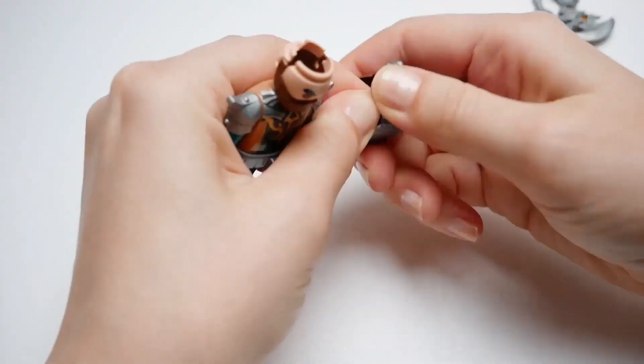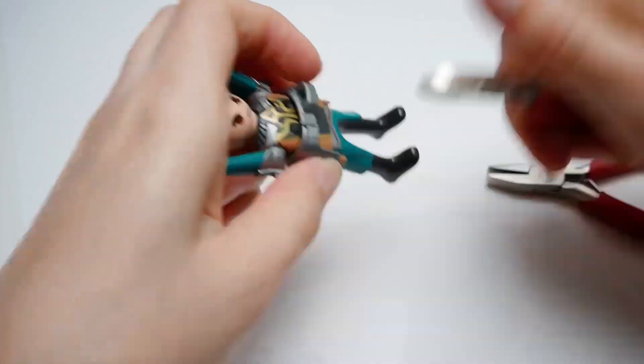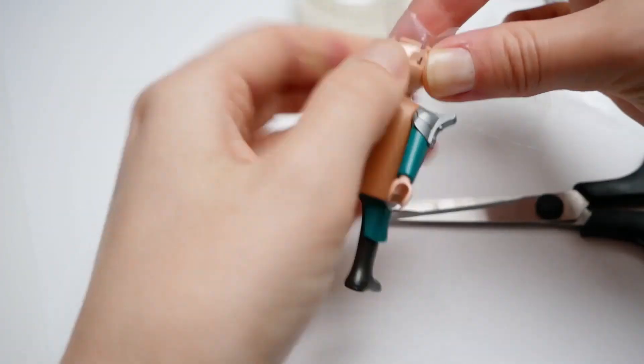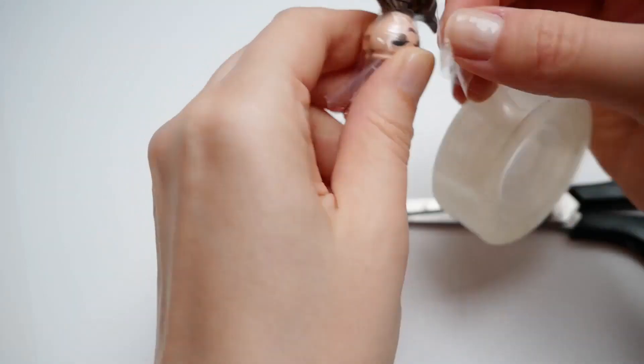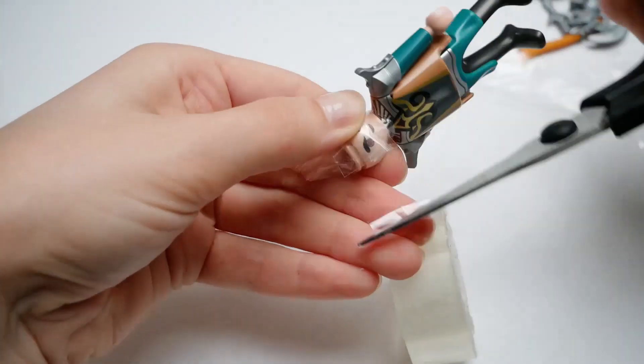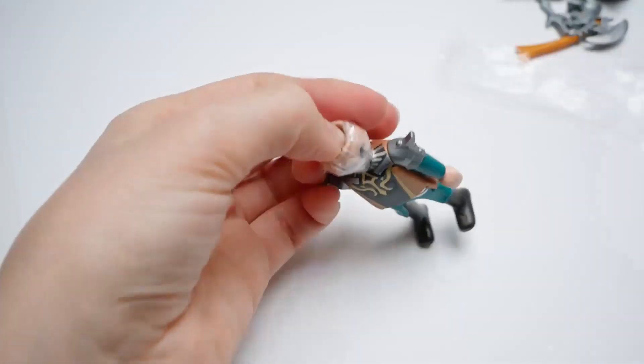So the first thing I do is remove all of the removable details from the figurine and protect its head and later also his hands with foil. This is an important step because I don't want to get his face dirty and scratched.